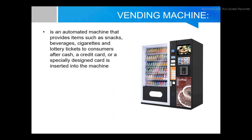So what is a vending machine? A vending machine is an automatic machine that provides items such as snacks, beverages, cigarettes, and tickets for consumption after cash, a credit card, or a specially designed card is inserted into the machine. Simply put, a vending machine is a machine where you insert coins and take your beverages.